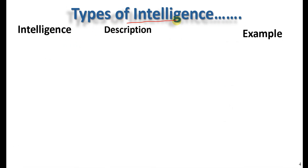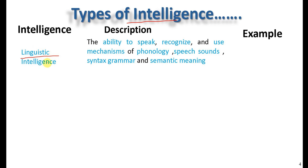The type of intelligence — some examples of intelligence. The first one is linguistic intelligence. Linguistic intelligence is the ability to speak, recognize, and use motion of speech sounds, syntax, and grammar. The meaning of language — to speak and communicate. For example, narrative and operator.